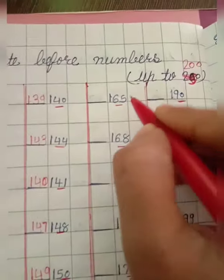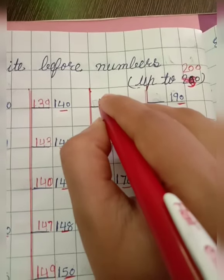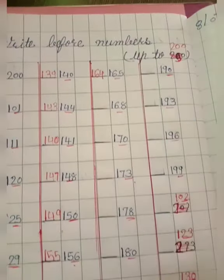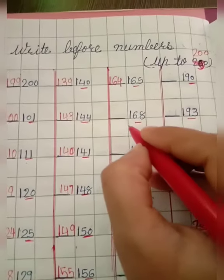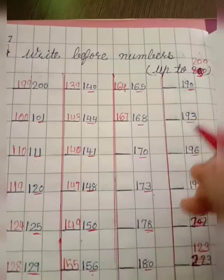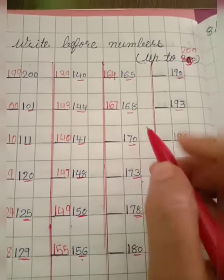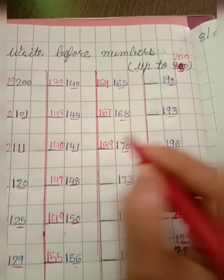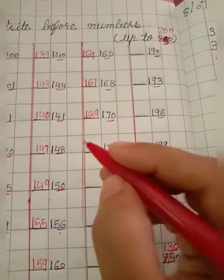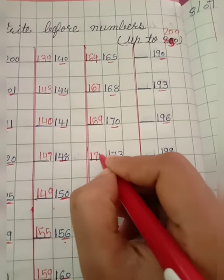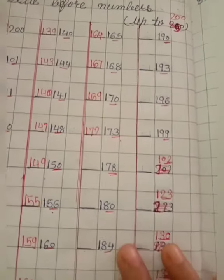65, 65 before 64, so we will write 164. 68, 68 before 67, so we will write 167. 70, 70 before 69, so we will write 169. 73, 73 before 72, so we will write 172.